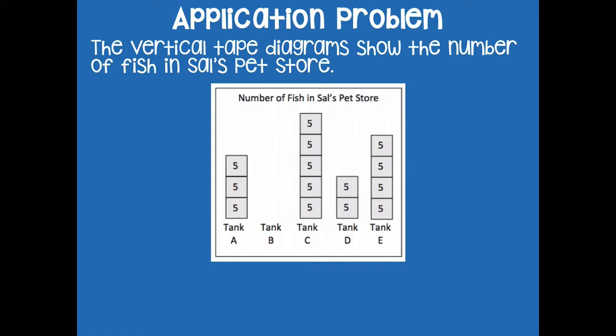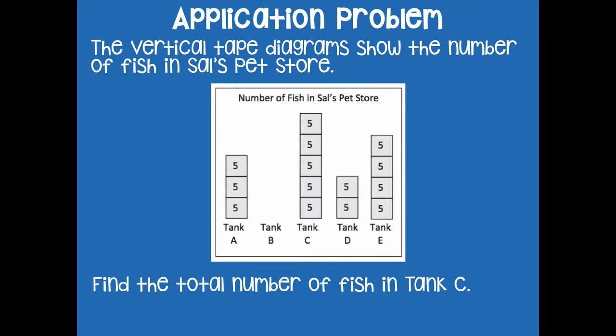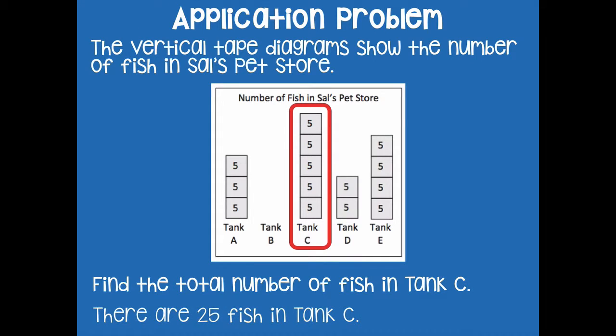We're going to find the total number of fish in tank C, so I'm only looking at tank C. What's the total number of fish in tank C? There are 25 fish in tank C. I know that because I have five units of five, and five times five equals 25.